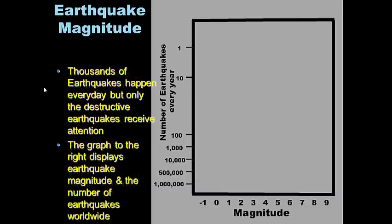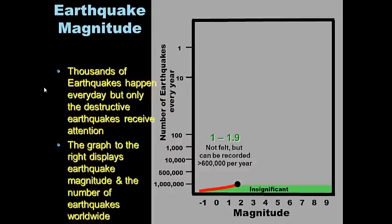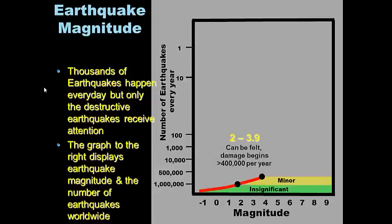Thousands of earthquakes happen every day, but only the destructive ones receive attention. Magnitude 1–1.9: over 600,000 per year — insignificant, you don't notice them. Minor quakes at magnitude 2–3.9 can be felt if you're near the epicenter — more than 400,000 per year.